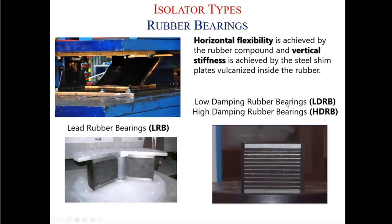Low damping rubber bearings are not commonly used alone — they are used with additional dampers, because isolators have two effects: the primary effect is period elongation, which you can achieve with low damping rubbers, and the other is additional damping, which you cannot achieve with low damping rubber. So you need either high damping rubber bearings or additional dampers used together with low damping rubber bearings.